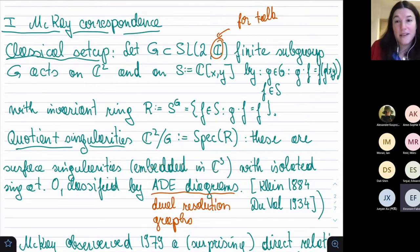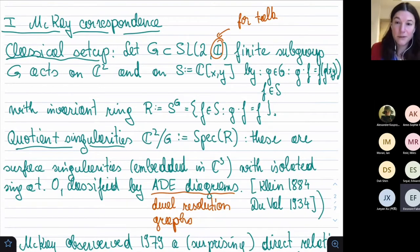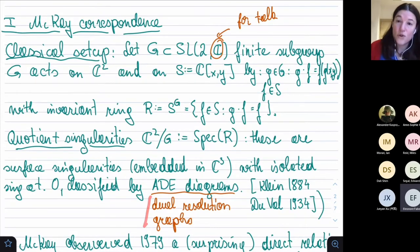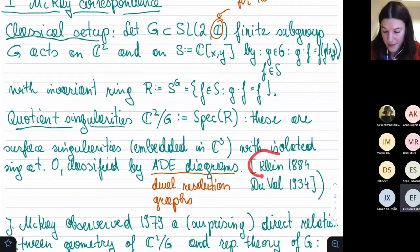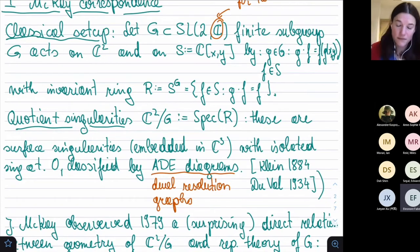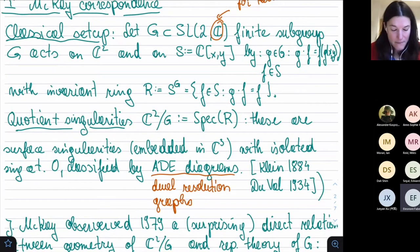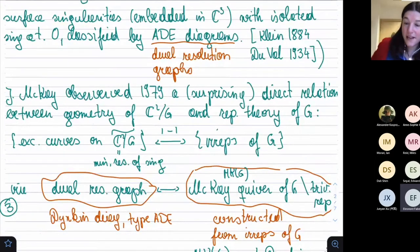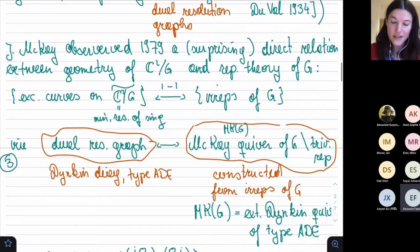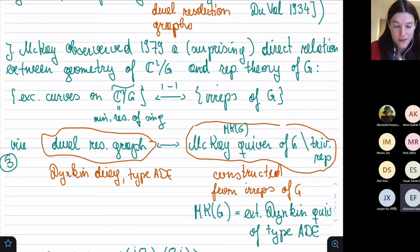These quotient singularities have many names — Kleinian singularities or rational double point singularities — and they are classified by the ADE Dynkin diagrams. These ADE diagrams appear on the singularities as the dual resolution graphs. This was first studied by Klein, and then Duval worked on the resolution of singularities. Then in 1979, John McKay made a surprising observation: he discovered a very direct link between the geometry of the quotient ℂ²/G and the representation theory of G.